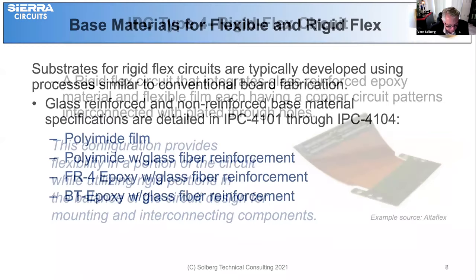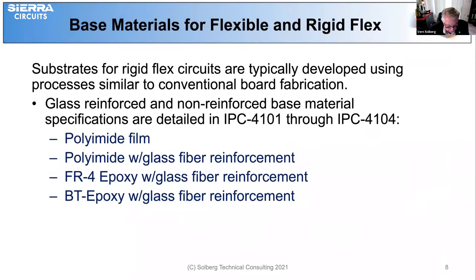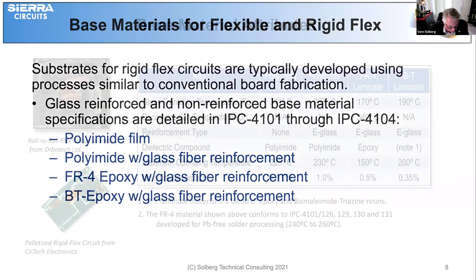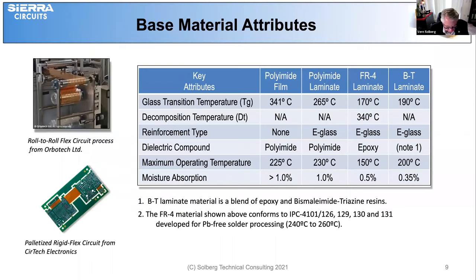For base materials for flex circuits and rigid flex, substrates for rigid flex circuits are typically developed using processes similar to conventional board fabrication. Glass reinforced epoxy and non-reinforced base material specifications are detailed in IPC 4101 and 4104, and they include the polyamide film, polyamide with glass fiber reinforcement, FR4 epoxy with glass fiber reinforcement, and BT epoxy with glass fiber reinforcement. It's important to research the various products to choose the one best suited for the design.